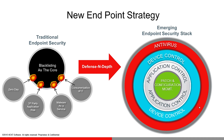The next step in the layered defense in depth approach is application control, also known as application whitelisting. This really flips the traditional security model on its head. We define what's allowed; anything else is denied by default. So if a new virus comes along, it's not on the whitelist and it can't execute. If a user tries to install some file-sharing application, it's not necessarily known bad, but still — it's not on the whitelist and it won't be allowed to execute. It's a much more effective approach than the traditional AV approach.